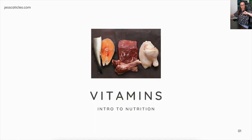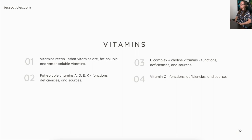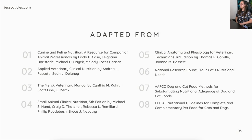Today we're talking about vitamins. We're going to do a vitamins recap — what vitamins are, fat-soluble and water-soluble vitamins, then go deeper into fat-soluble vitamins A, D, E, and K covering functions, deficiencies, and sources. For water-soluble vitamins we'll cover B-complex and choline, and vitamin C, each with functions, deficiencies, and sources. All references and resources are listed.